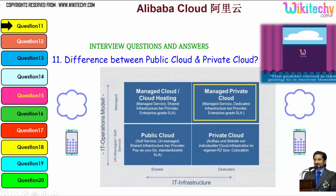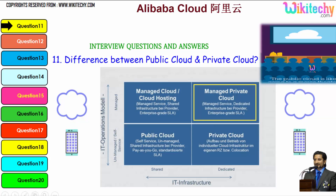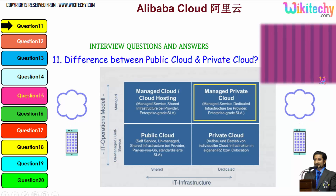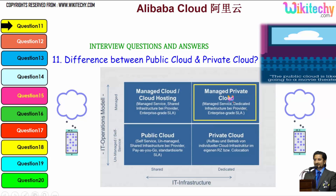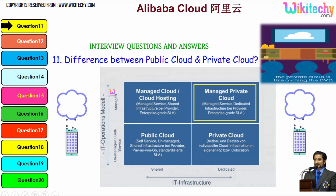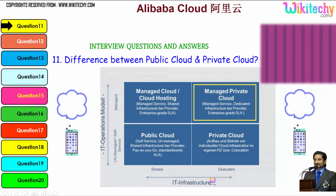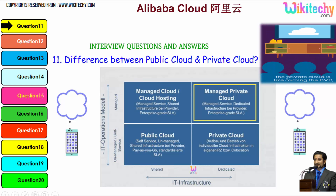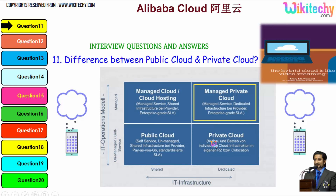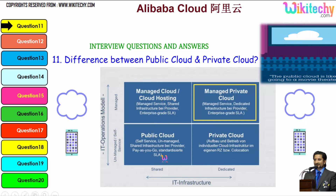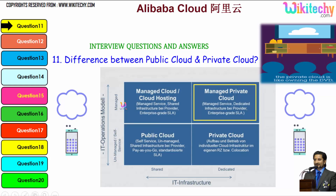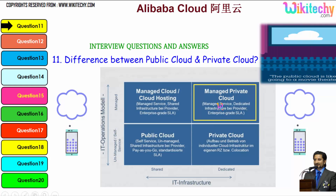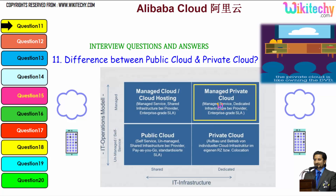Public cloud is like viewing a film in the theatre. Private cloud is viewing a film on DVD at your home. And hybrid cloud is like video streaming. Looking at the IT operations model and IT infrastructure: a shared and unmanaged service is given by the public cloud; a dedicated unmanaged service is given by the private cloud; a managed cloud hosting is given by the shared managed cloud; and a managed dedicated service is given by the managed private cloud.